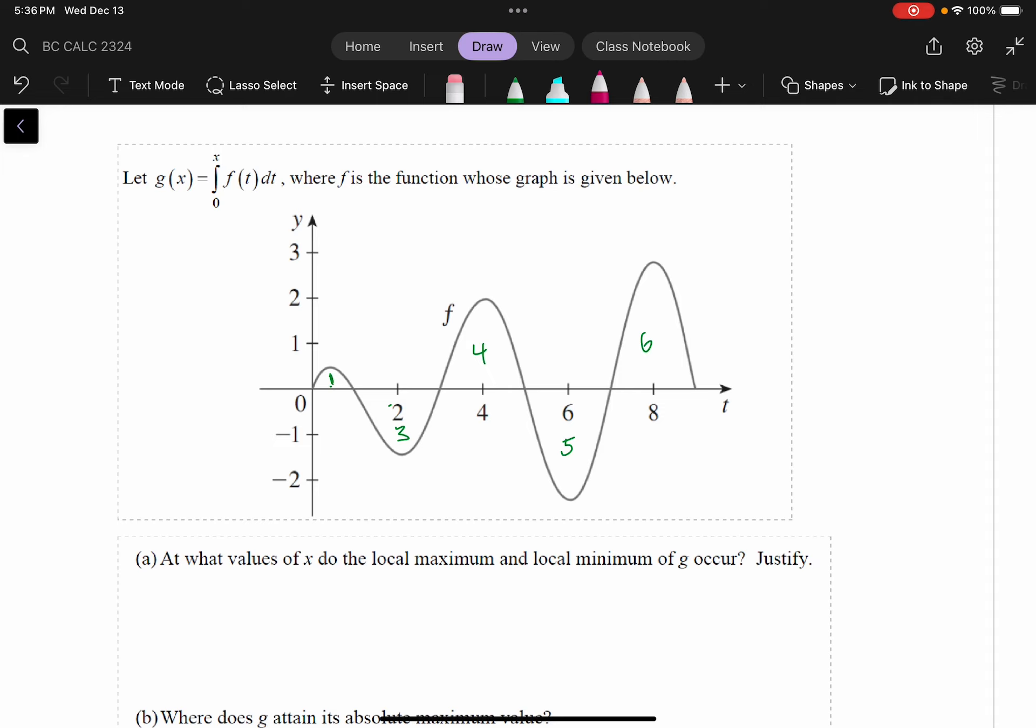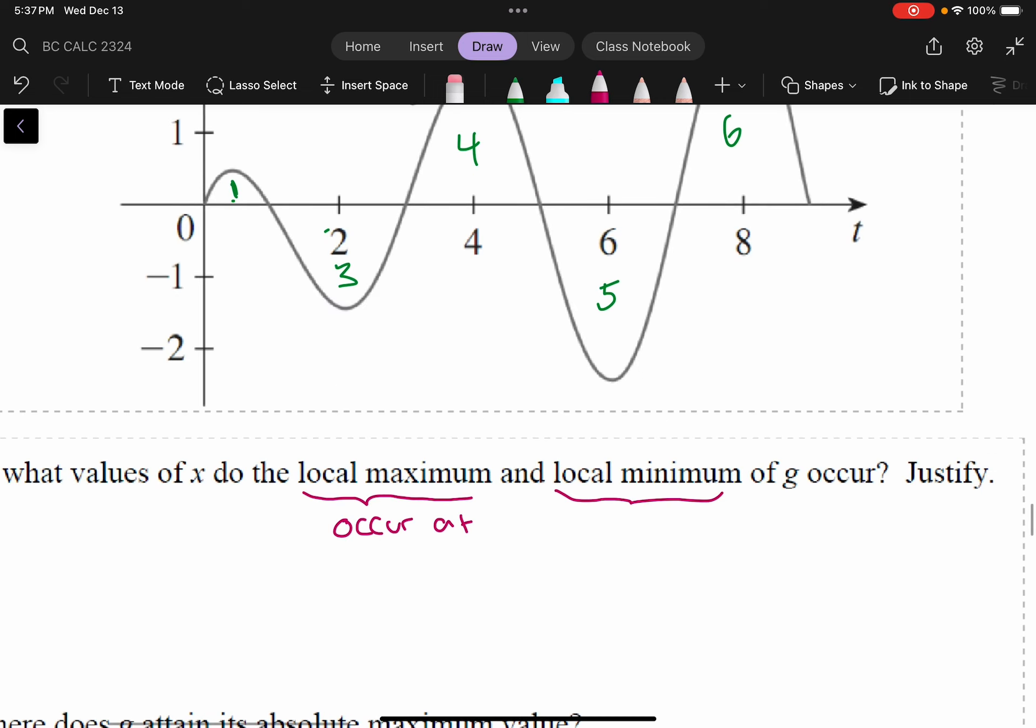Okay, so this question says, at what values of x do the local max and local minimum of g occur? And again, g is the integral function here that accumulates area from 0 to x under the function f. A key concept in calculus is that local maxes and mins occur at endpoints and critical points.